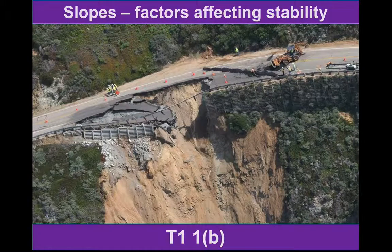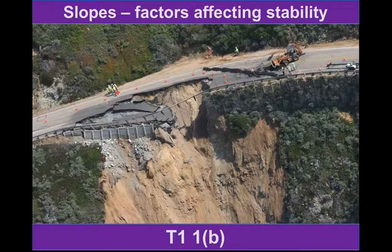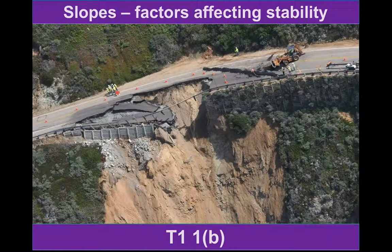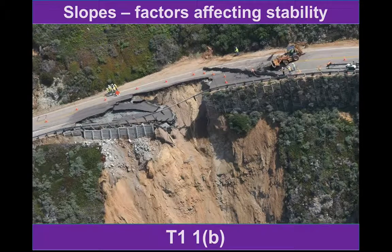Hi, this video is all about the factors that affect the stability of a slope and those that could trigger the type of mass movement we might see, such as in this photograph here.